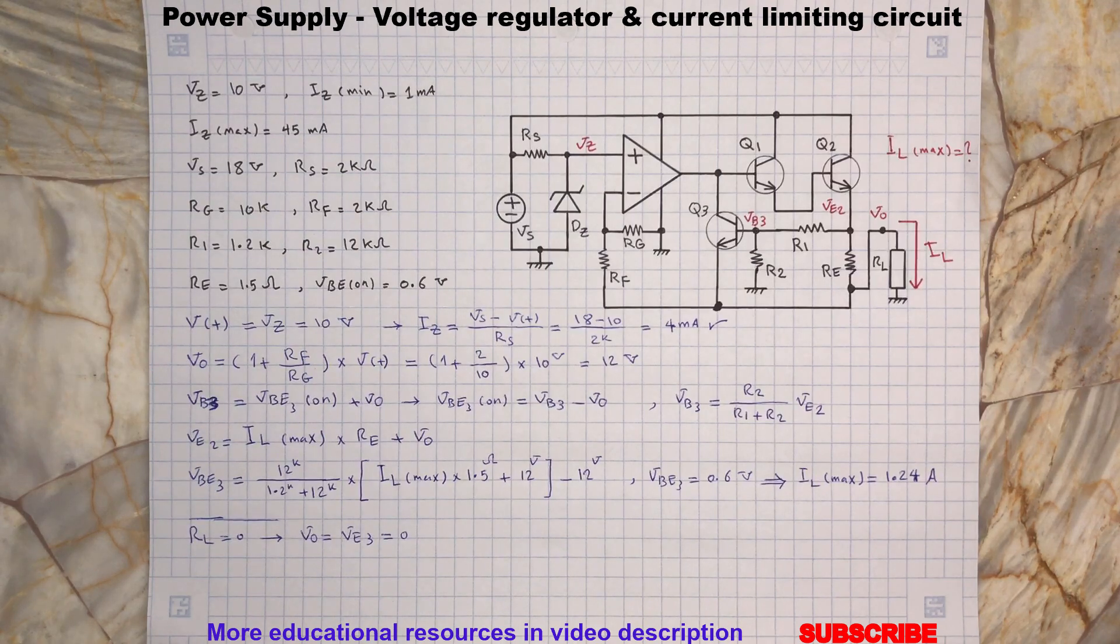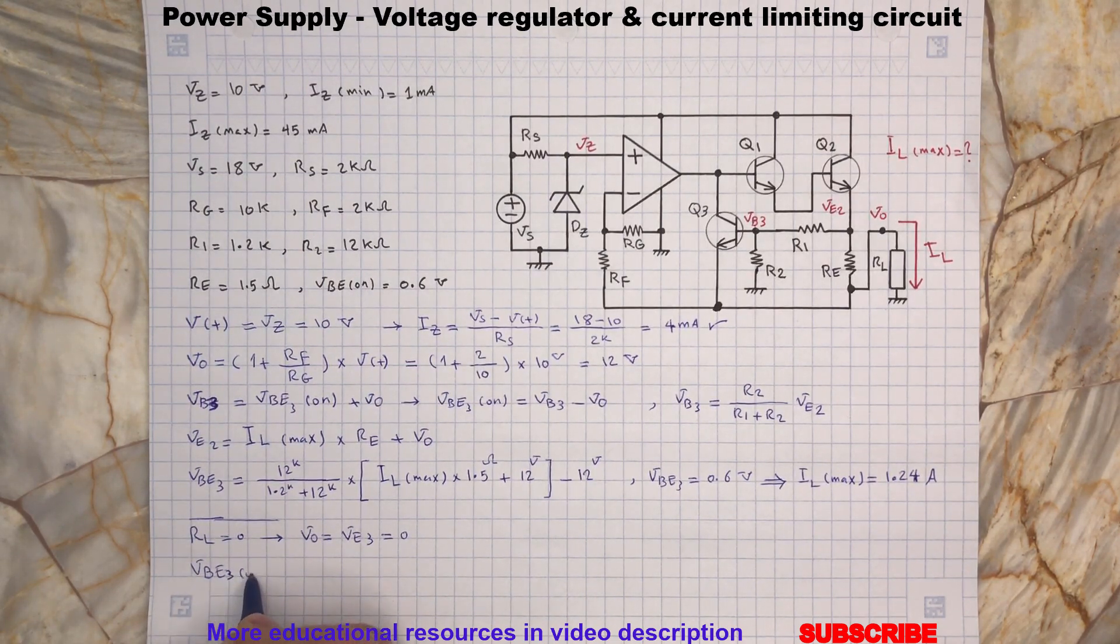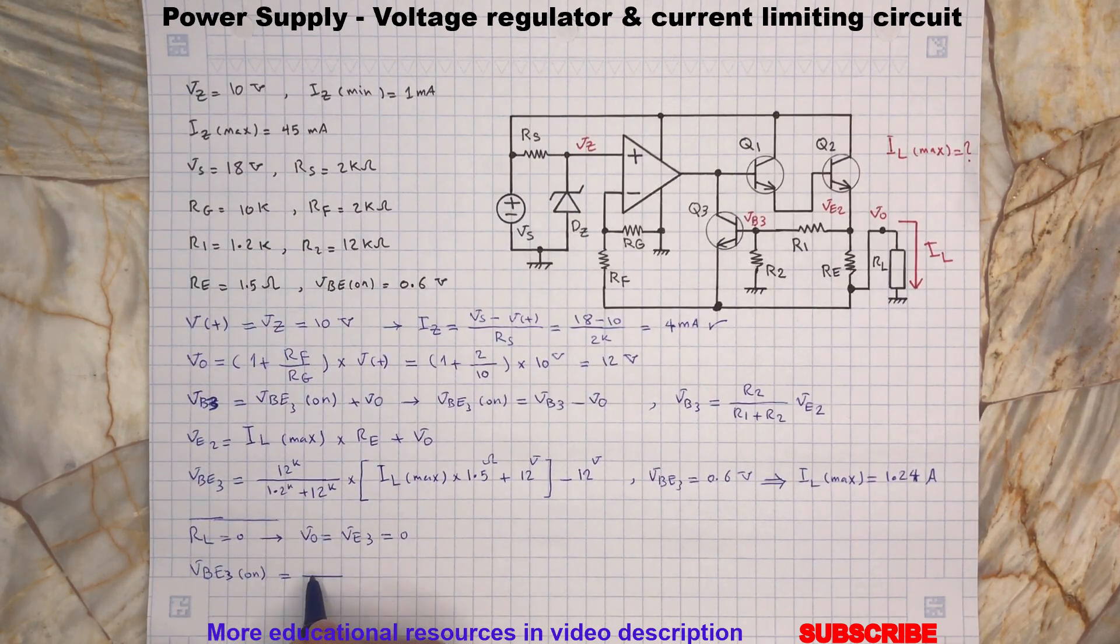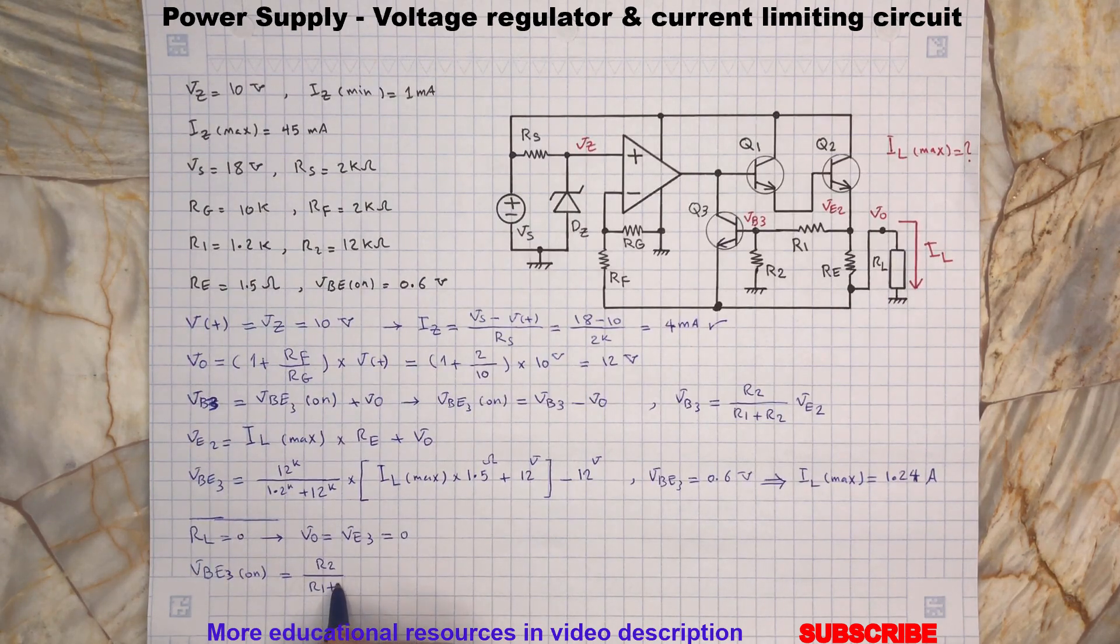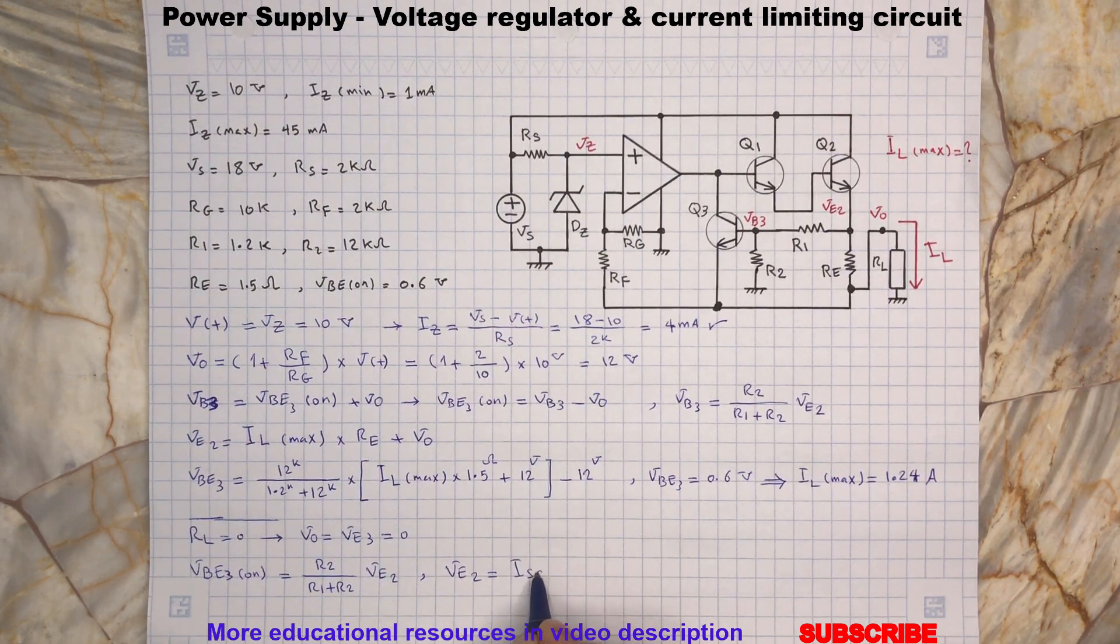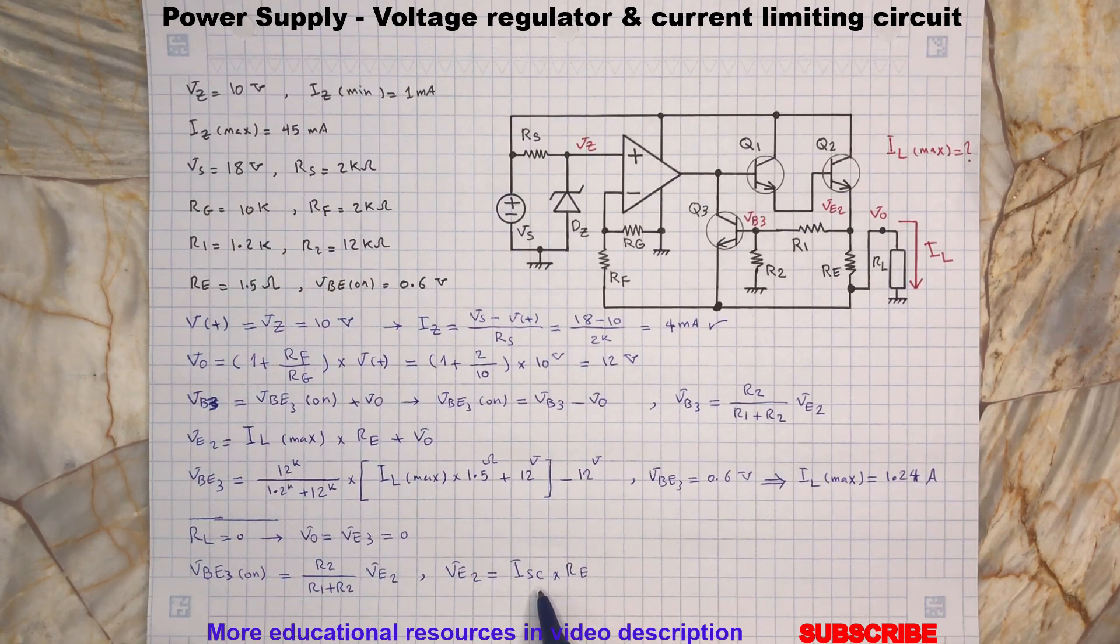Therefore we will have the following relationship for Q3. Here ISSC is the short circuit current.